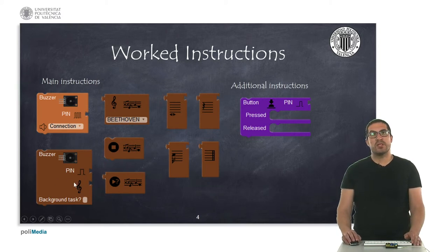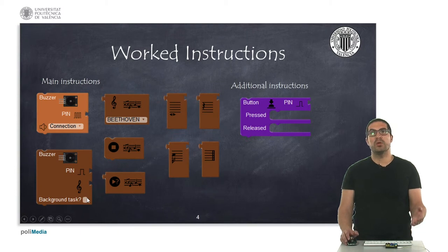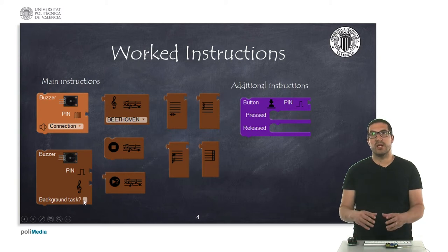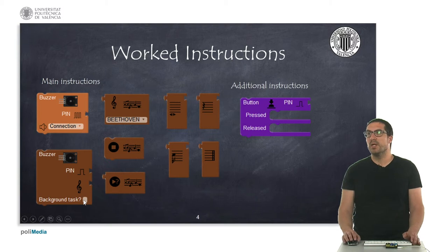Whenever you reproduce a sound, it always blocks your processor and waits until the sound is done. But you have this option, it's quite handy because you can reproduce the sound meanwhile you're doing other things. This is known as a background task. Actually, it's generating the code on an interrupt, on a timer interrupt. And you have these two instructions to stop or interrupt the current melody and to see whether there's a melody playing or not.